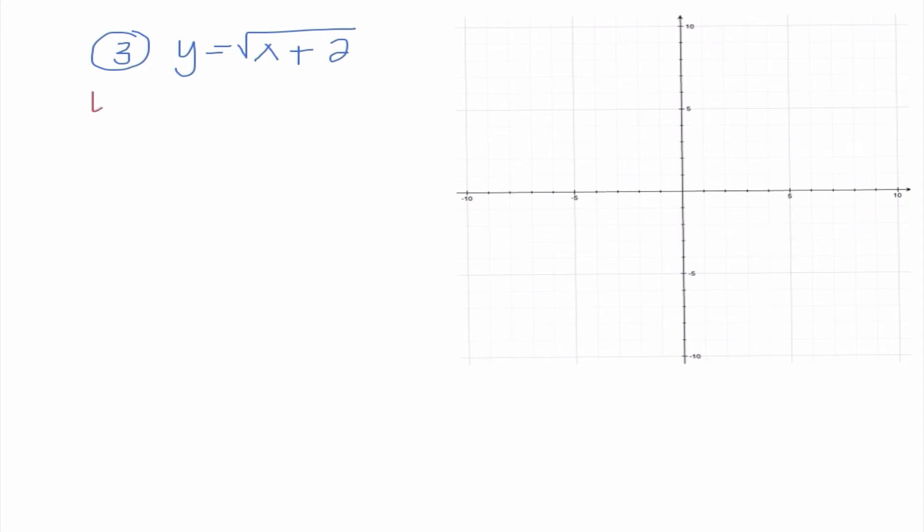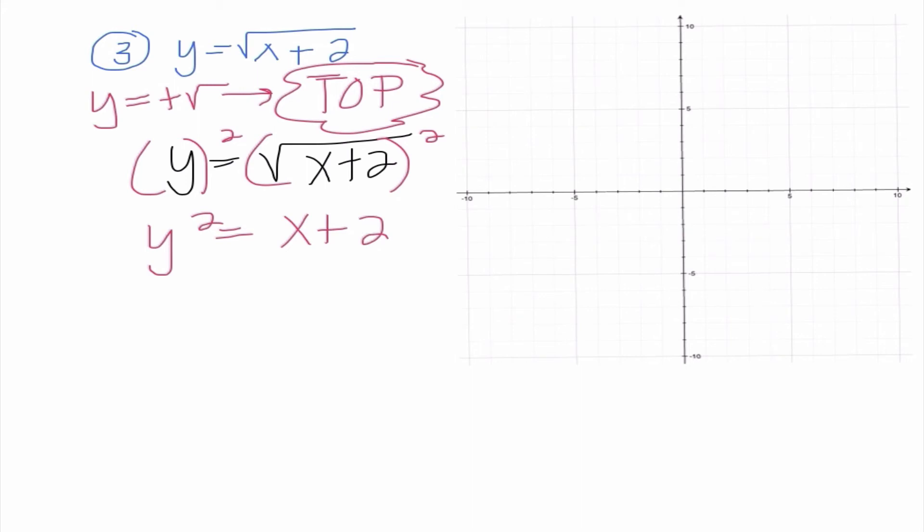The one thing I noticed though, I have y equals a positive square root, which means I'm graphing the top half. And I'm making this really obvious to myself because sometimes it's easy to just blank out and go through the motions. Make it obvious you're graphing the top half because that will affect what our overall answer looks like. So we need to kind of think back to things we know, and I know in order to get rid of my square root, which is really what I want to do, I need to square both sides. So I get y² equals, when I square the square root, they cancel out and I'm left with x + 2.